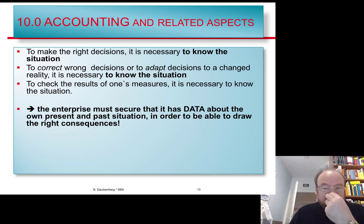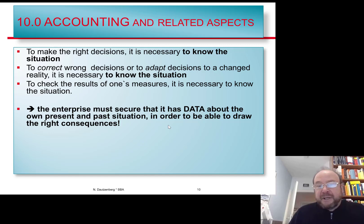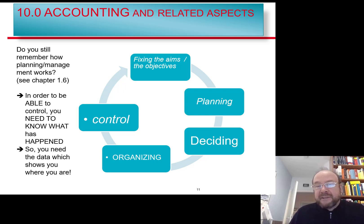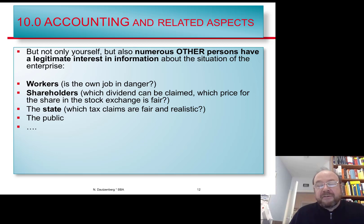For all these reasons an enterprise must secure that it has data about the situation in the past and at present, in order to draw the right conclusions and be informed enough. When we talked about management and planning in the first chapter, we said it's always a revolving circle: you begin by fixing aims, then plan and decide based on probable consequences, organize your decisions into real activities, then control what happened and draw conclusions — and then begin the next planning period. Gathering data is essential for this.